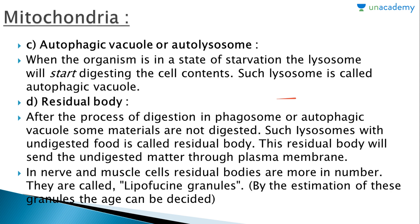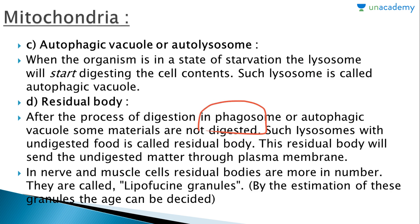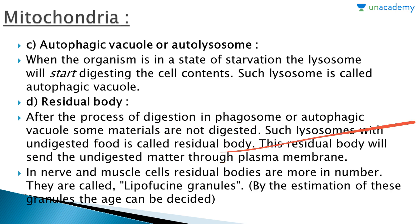The fourth kind is the residual body. After the process of digestion in the phagosome or autophagic vacuole, some materials are not digested. These undigested leftovers are found in the residual body. The residual body sends the undigested matter through the plasma membrane to the outside of the cell. Through this process, excretion of undigested materials takes place. So the lysosome is basically an intracellular digestive and excretory organelle of the cell.